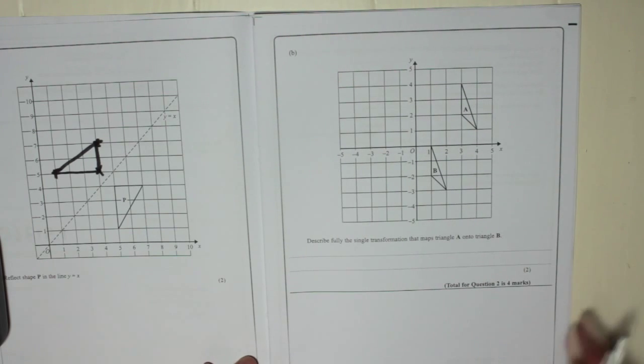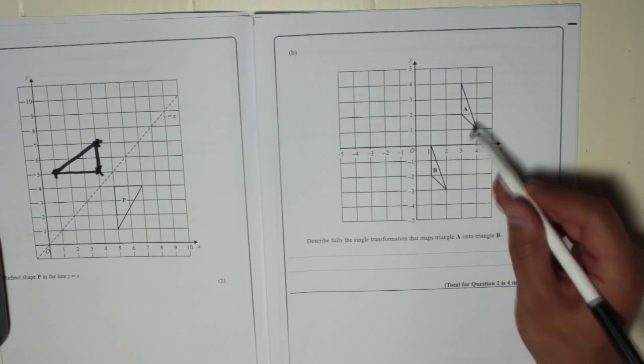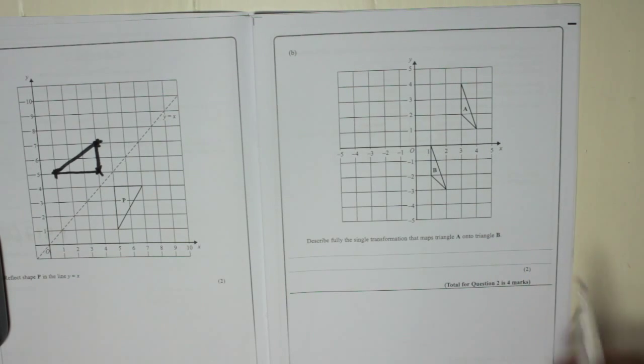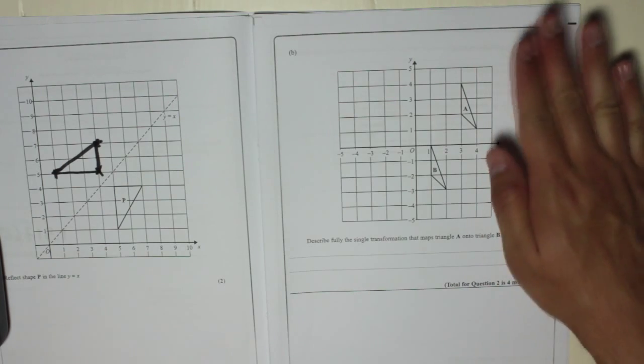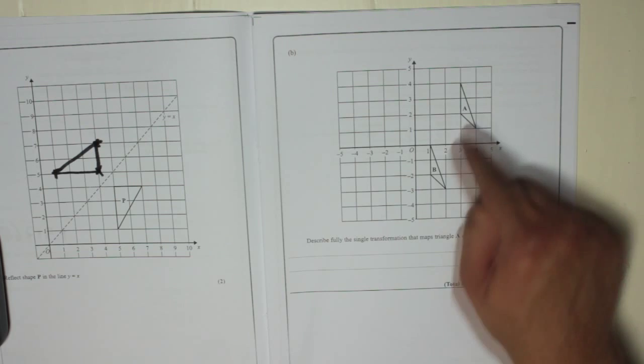Right, question b: describe fully the single transformation that maps triangle a onto b. Now because the two shapes are the same size, you've got three choices. You've got rotation, which means shape a has been rotated somehow to b, and it obviously hasn't because it's facing the same direction.